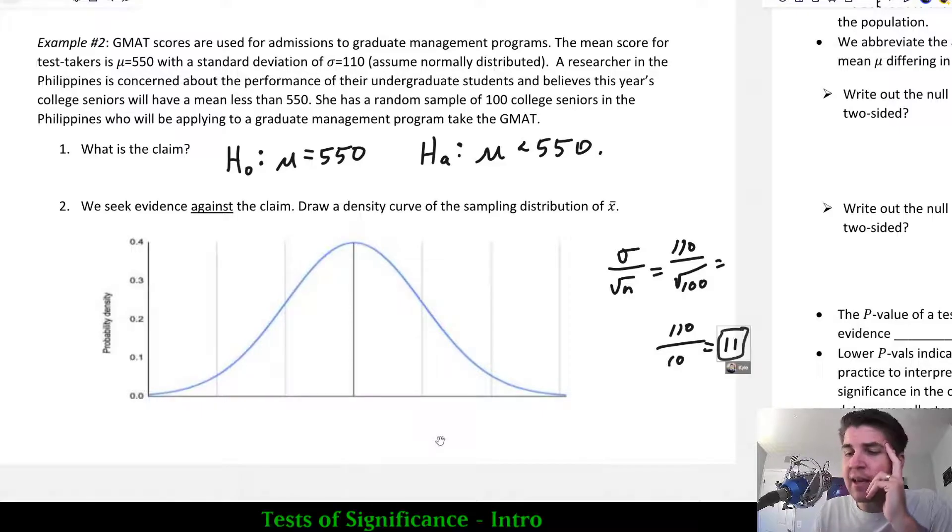Basically, when I take a sample of students within the Philippines, I know that their standard deviation of the sample mean should be roughly 11. And that will tell me the probability that I get a sample that is much higher or much lower than the true established mean 550.